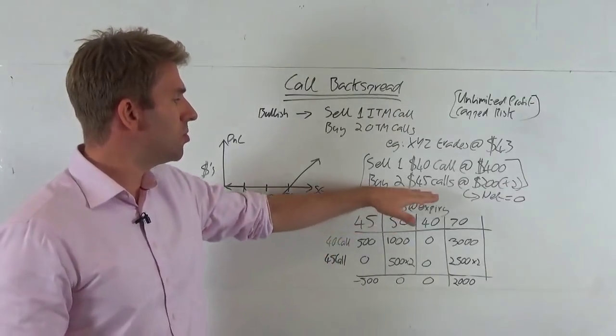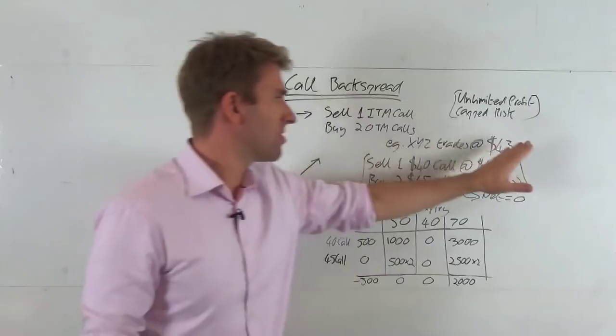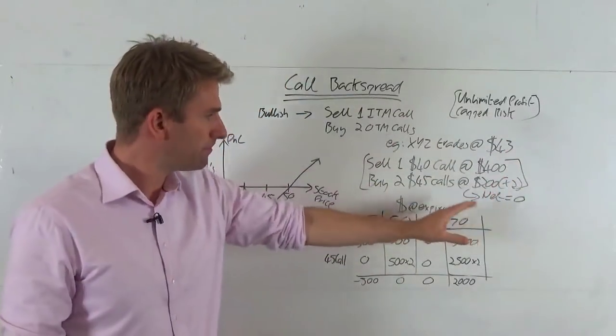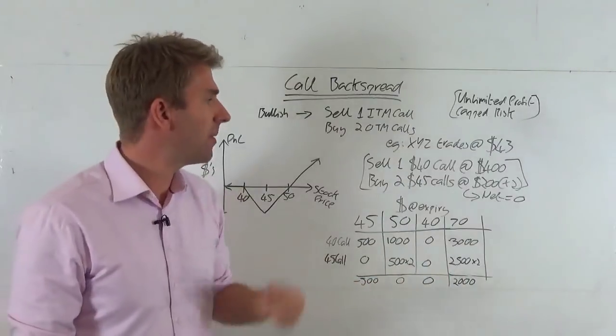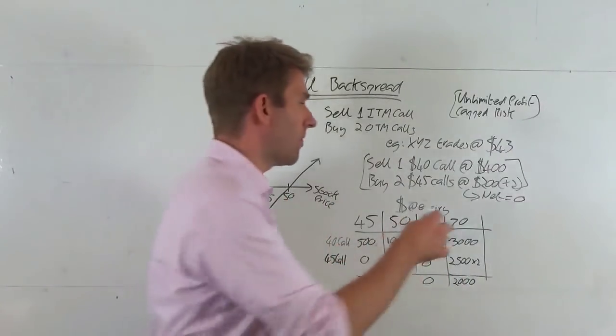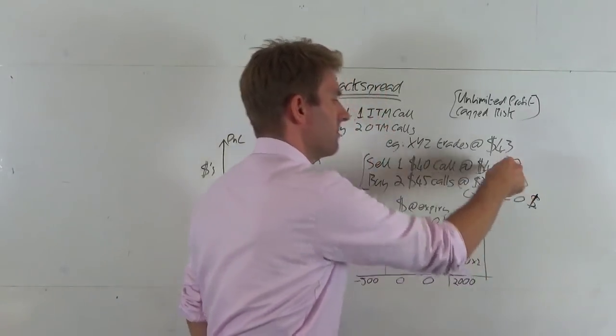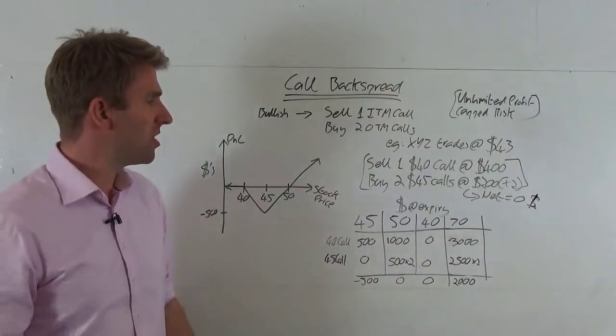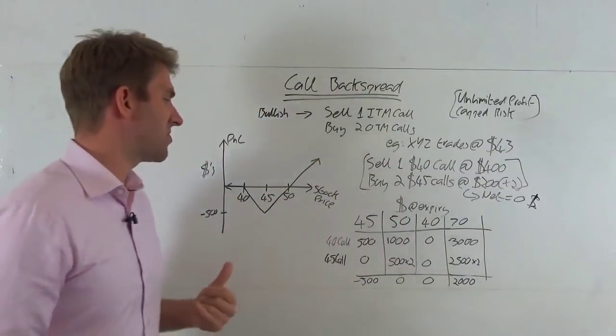Now, we've got $400 in our pocket. We now then buy two 45 calls, which are out of the money. Of course, the current price is 43, so this is out of the money. And these are costing us $200 each, each contract. We buy two of those, so it's $400. So our net on the whole deal is $0. Because we've received $400, we've paid out $400, but we've got this position now. So what happens in various scenarios?